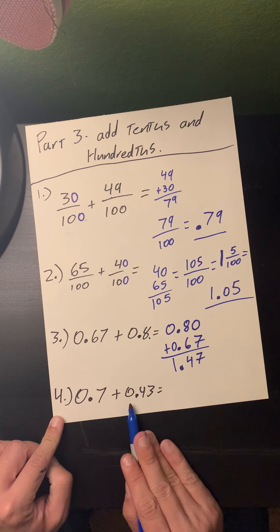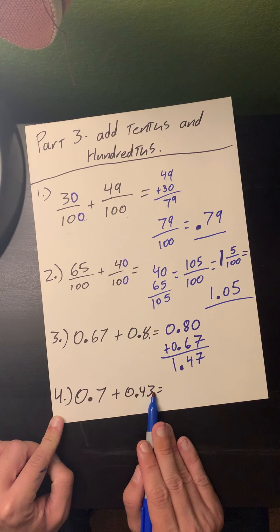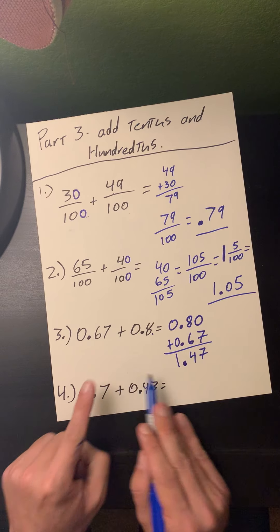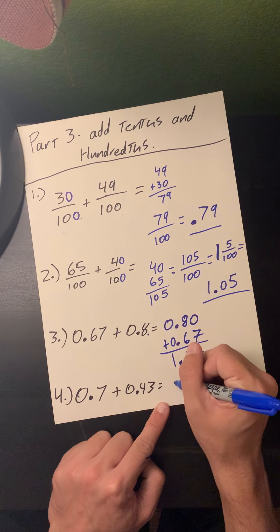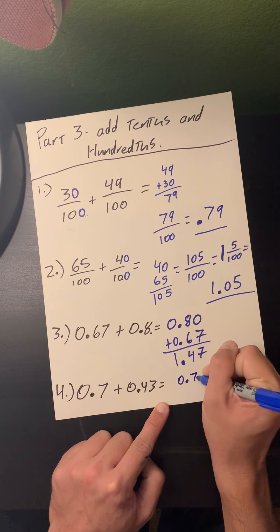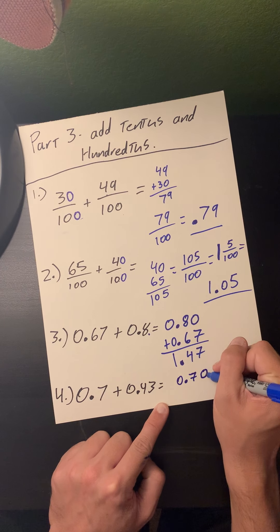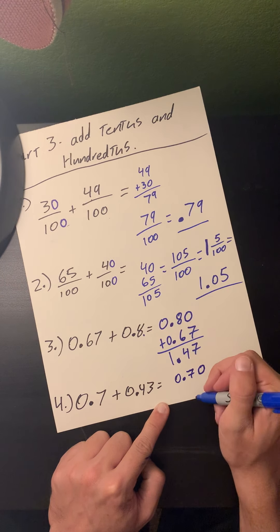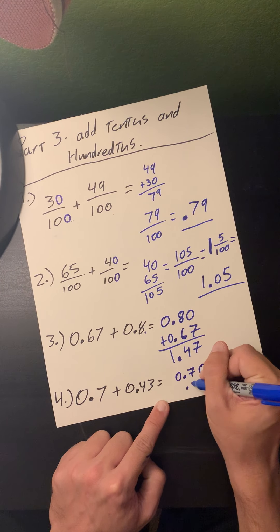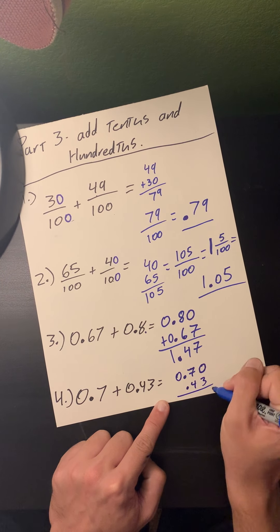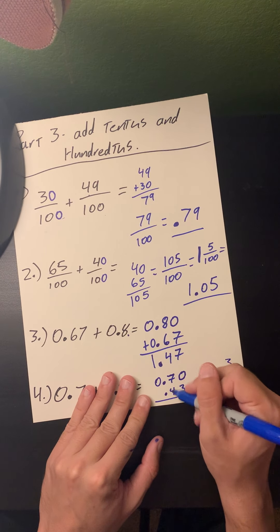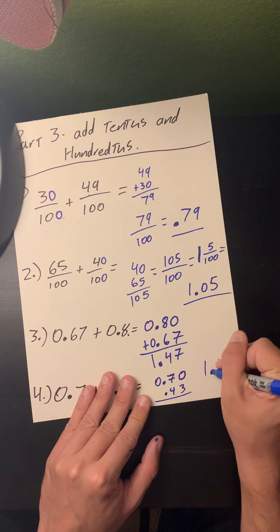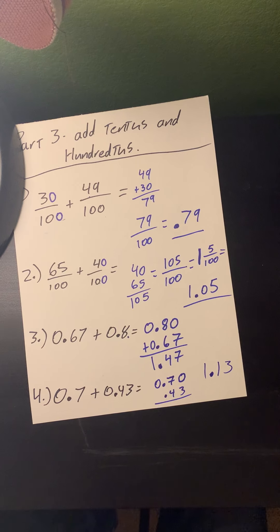Problem number four: I see a 7 and a 3, and those add up to 10 — but the 7 is in the tenths spot and the 3 is in the hundredths spot. I line them up vertically, put a placeholder zero after my 7 tenths, then line up 43 hundredths. Three plus zero is 3, and 70 plus 40 is 110. Seventy cents plus 43 cents is a dollar and 13 cents, so the answer is 1.13.